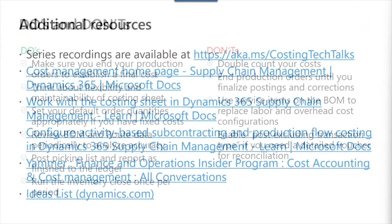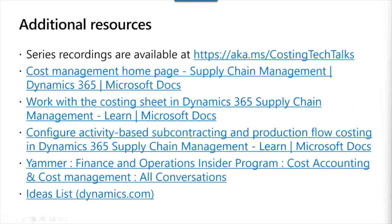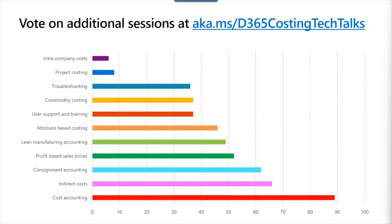As usual, we have pulled together some resources. We have created an aka.ms link to access the recordings at aka.ms/costingtechtalks. We also encourage you to visit the doc site and review the new and updated content created throughout this series, including specific links for the learn content related to the costing sheet and how to configure activity-based subcontracting and production flow costing. We invite you to connect with the product team on the Yammer site and submit ideas to the ideas site. If you haven't completed our survey about additional costing topics, the link is aka.ms/d365costingtechtalks.